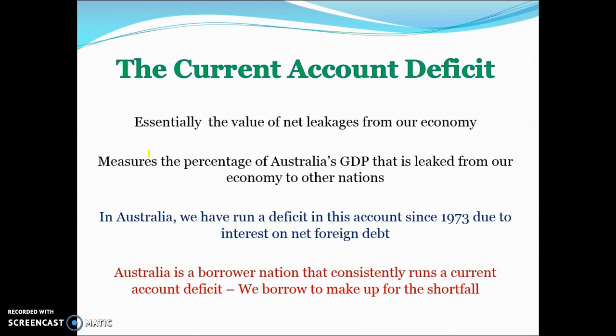The current account deficit measures the value of net leakages from our economy — the difference between what we're earning as a country and what we're spending. It shows, as a percentage of Australia's GDP, what has leaked from our country to other nations. Australia has run a deficit in this account since 1973, meaning Australia has consistently been spending more than we earn. We are a borrower nation and have to consistently fund that current account deficit by borrowing from overseas, so our debt continually accumulates.